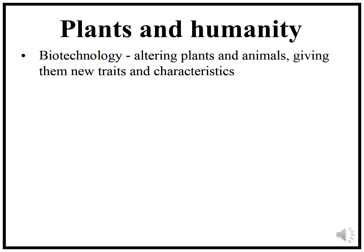The first way in which plants affect our everyday lives is through a concept known as biotechnology. This is a new field where plants and animals are altered to give them new traits and characteristics. For example, the tomatoes you buy from Woolworths keep a lot longer in the fridge than those you pick from the vine in your backyard, and that is due to an alteration of the genes within those plants.